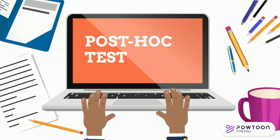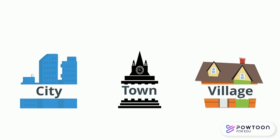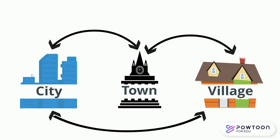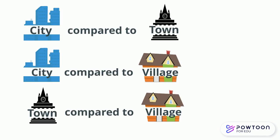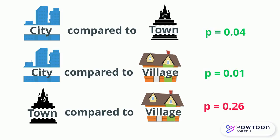So we decide to run a post hoc test for our sleep and place you live ANOVA. The post hoc test compares between every category of your independent variable to see where there are significant differences in the dependent variable. So here a post hoc test compares the average amount of sleep between cities and towns, between cities and villages and then finally between towns and villages. The post hoc test gives us a p-value for each comparison, which if it is below 0.05 indicates there are significant differences between those two categories.